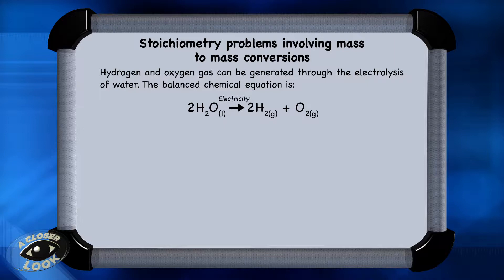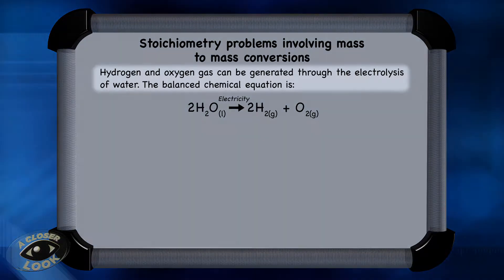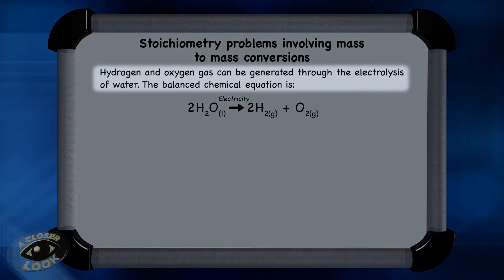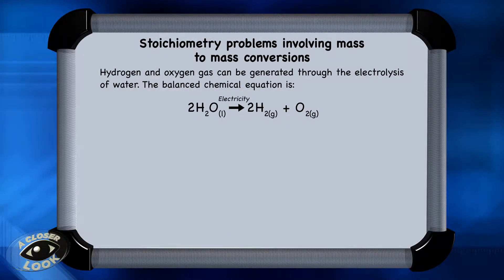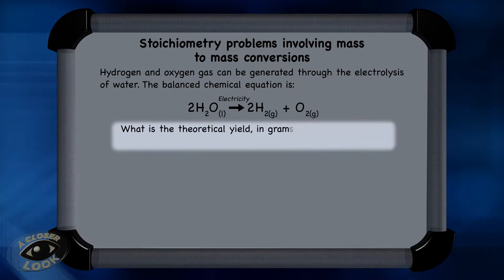Here's an example of a mass-to-mass stoichiometry problem. Hydrogen and oxygen gas can be generated through the electrolysis of water. The balanced chemical equation is 2H₂O → 2H₂ + O₂. What is the theoretical yield in grams of oxygen from the decomposition of 11 grams of water?